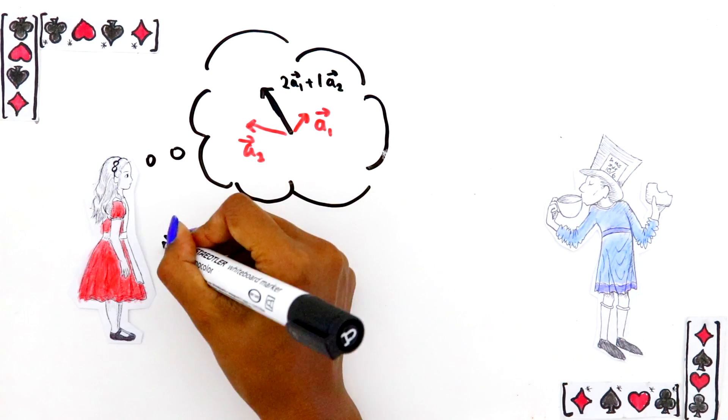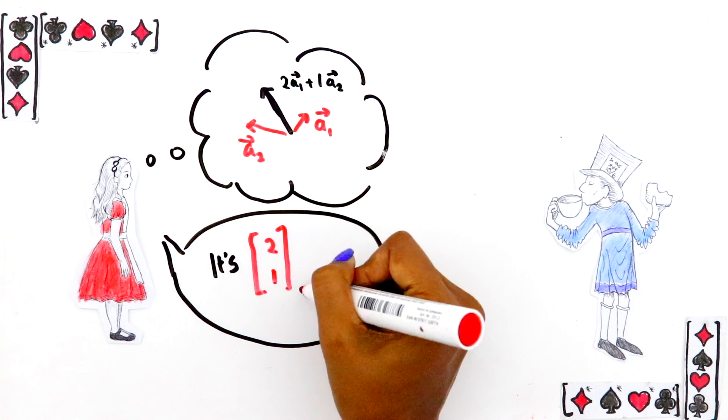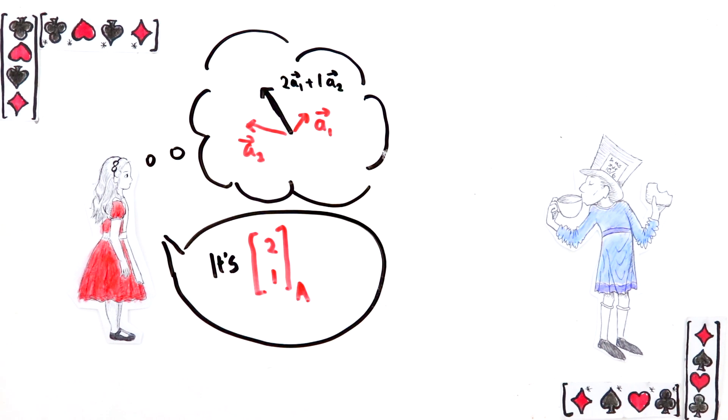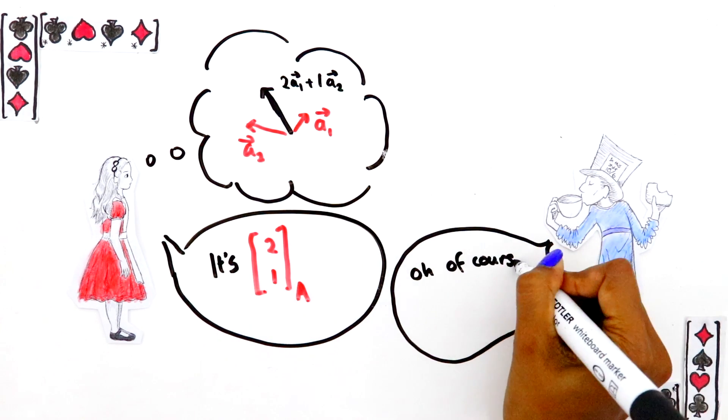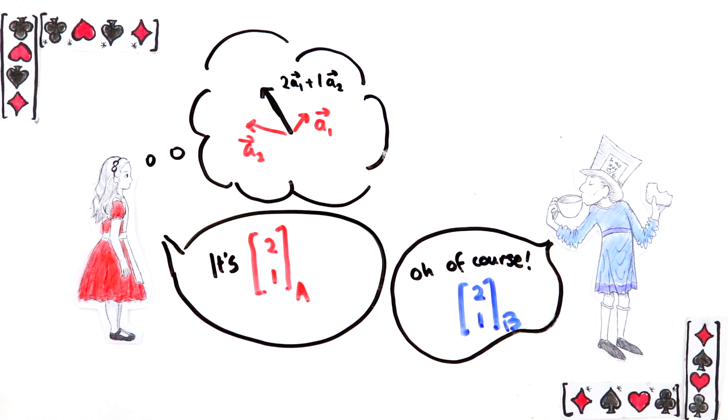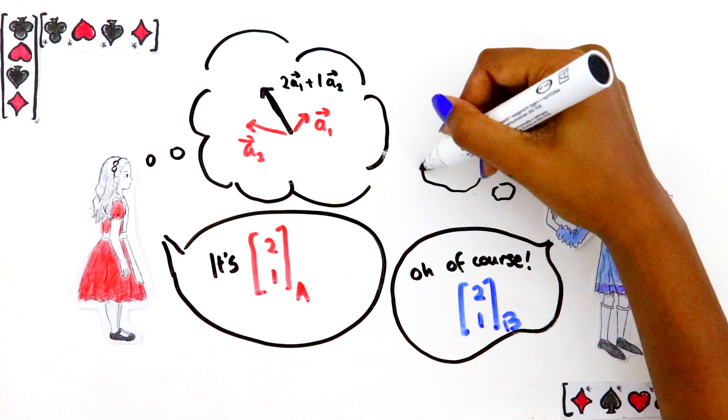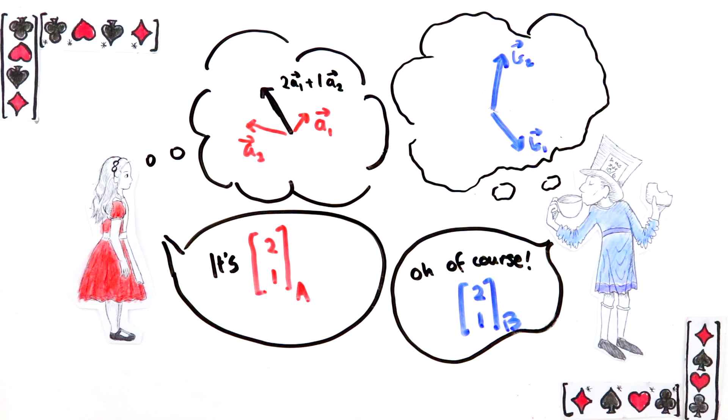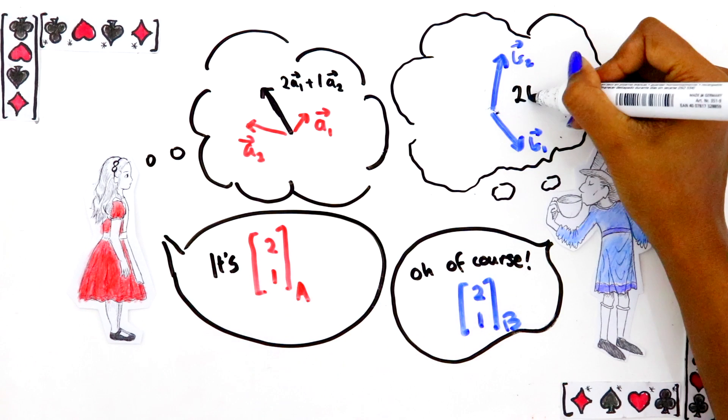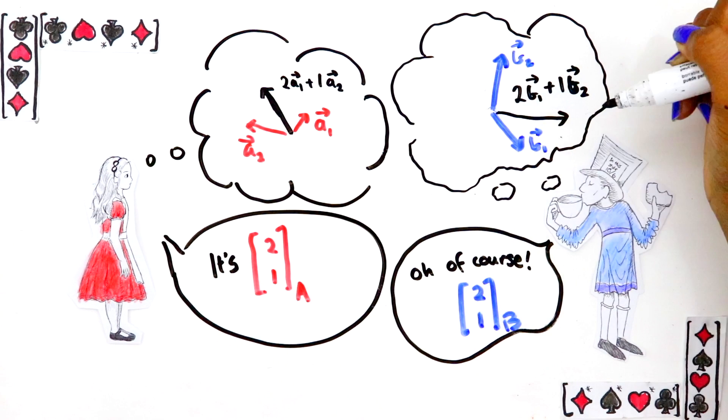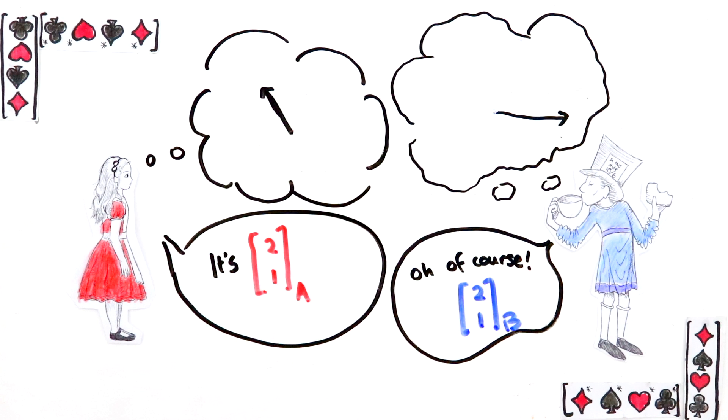She can write this compactly by writing it as a column like this, and she can tell Bob what that column is. But here's a problem, Bob isn't using the same basis vectors as her, he's using this basis instead, and so to him this column vector means this sum, which is this vector, which is completely different from the one Alice had in mind.